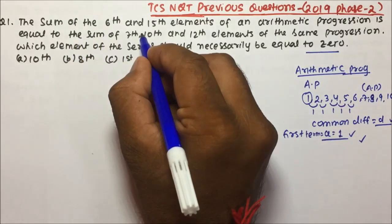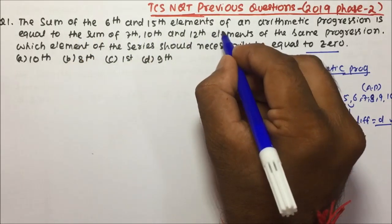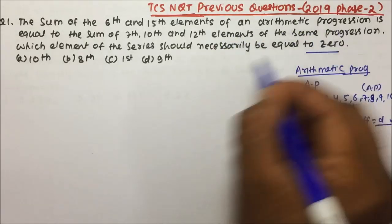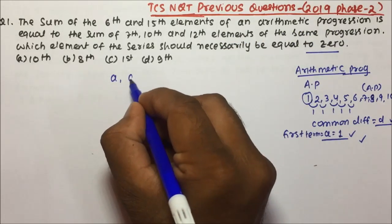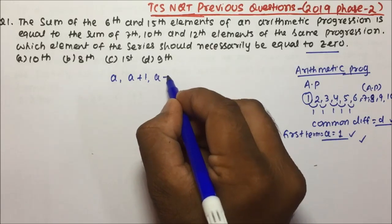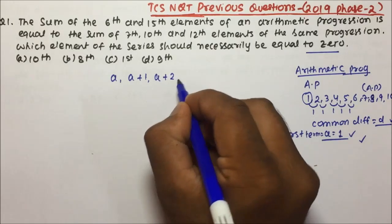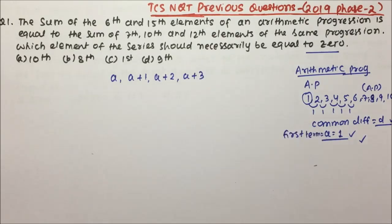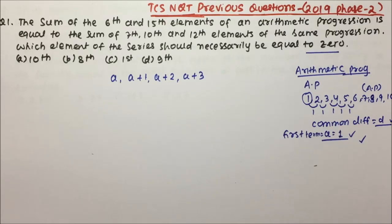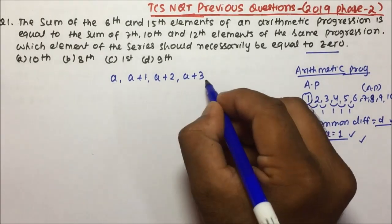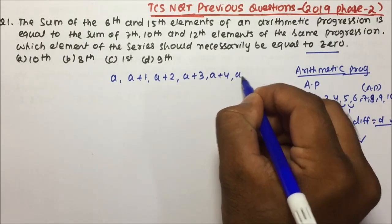Now, friends — the sum of the 6th and 15th elements. Suppose the series is: a, a+1, a+2, a+3, a+4, a+5 — all in arithmetic progression. Here a is the first term, a+1 is the second, a+2 the third, a+3 the fourth, a+4 the fifth, and a+5 is the 6th term.